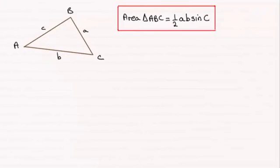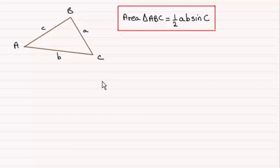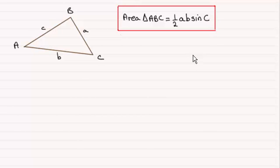Hi there. You're most probably familiar with finding areas of triangles by using the formula half base times the perpendicular height. But what I want to do here is introduce you to another formula — a very useful formula for finding the area of a triangle. It's often quoted as a half AB sine C. I'm giving you this without proof; if you want to see the proof, do check out the next video in this series.